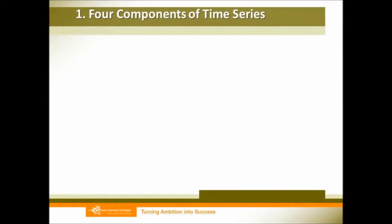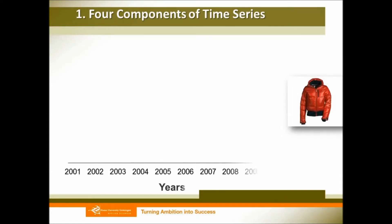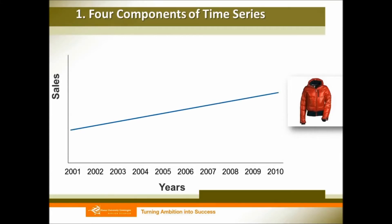First, we need to distinguish four components of time series. Let's suppose we are now selling winter clothes, which are very sensitive to the seasons. We record the sales from 2001 to 2010, and then we can formulate our regression line based on the sales. We call this the trend line, also called secular trend, which is the first component of time series.